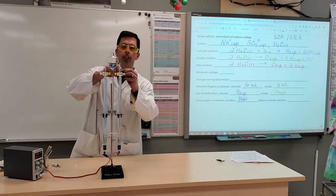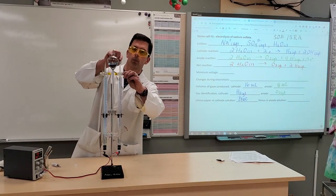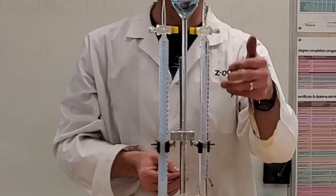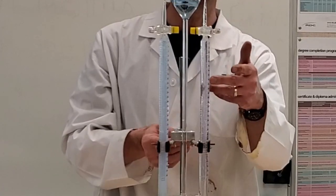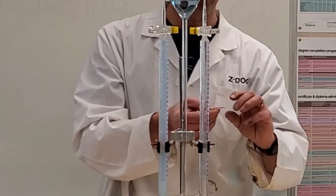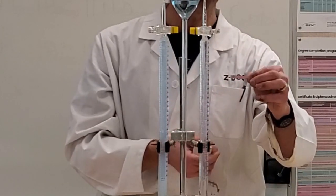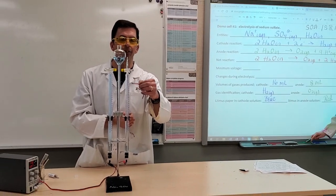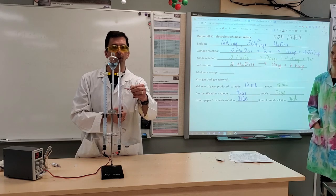And moving to our other electrode, the bromothymol blue is yellow to colorless here. Indicating the presence of an acid, and that's verified by our blue litmus turning to red. So we definitely have an acid here at the anode.